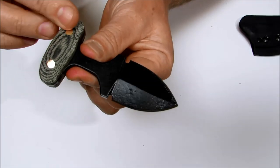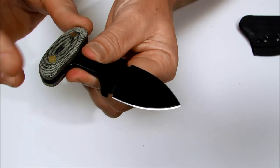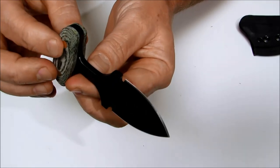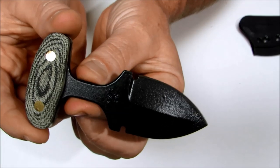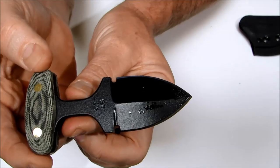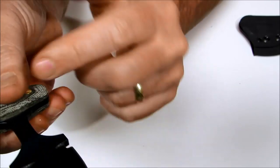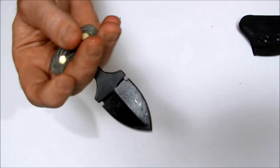You have linen micarta scales with brass pins. Here you can see the USA stamp and the ST logo. It's got a black traction coated finish on there.